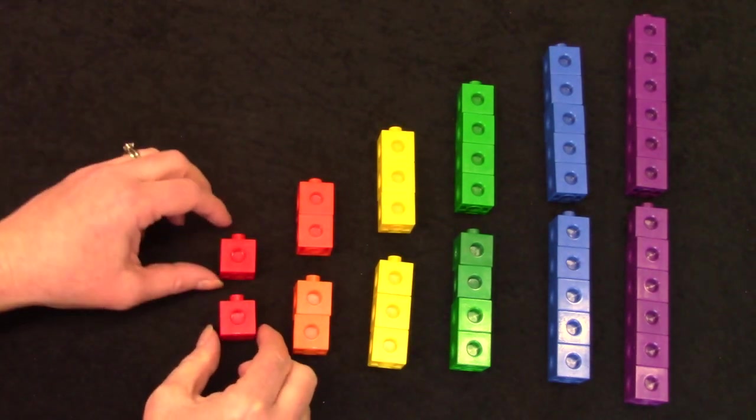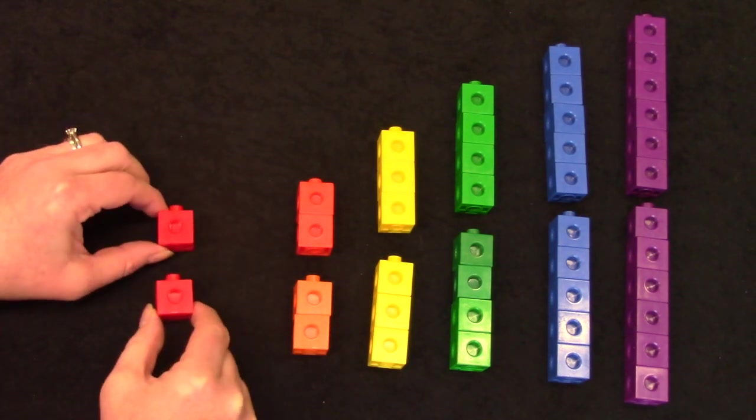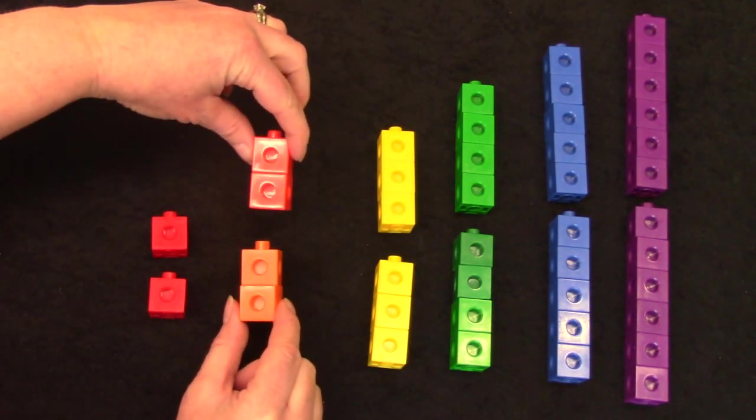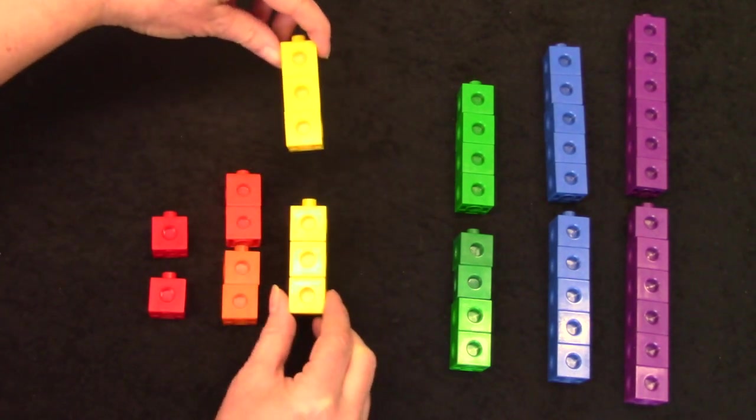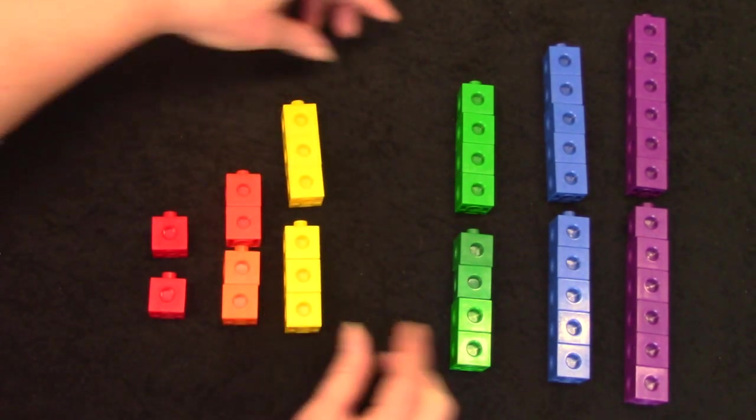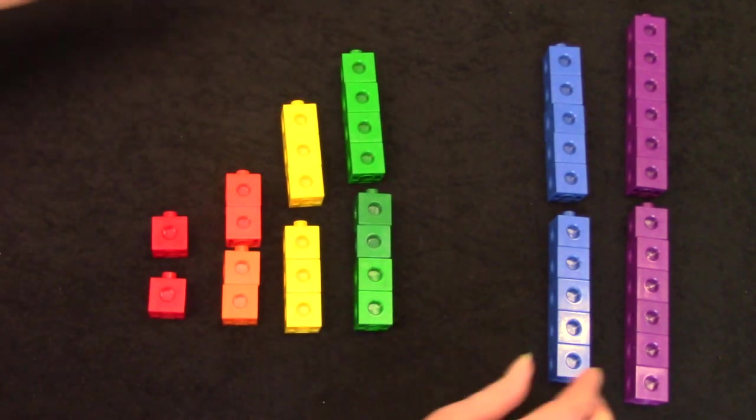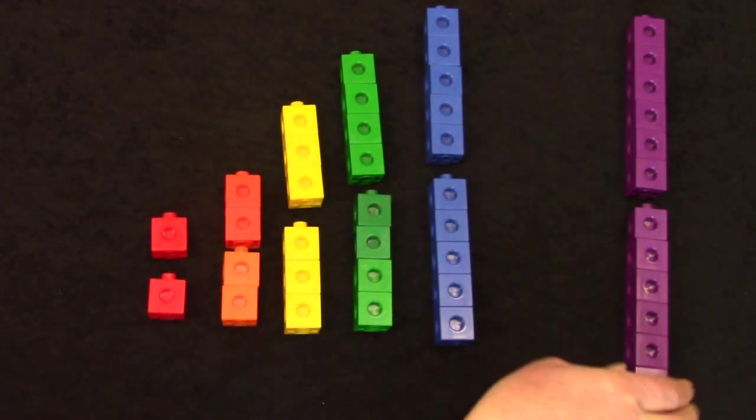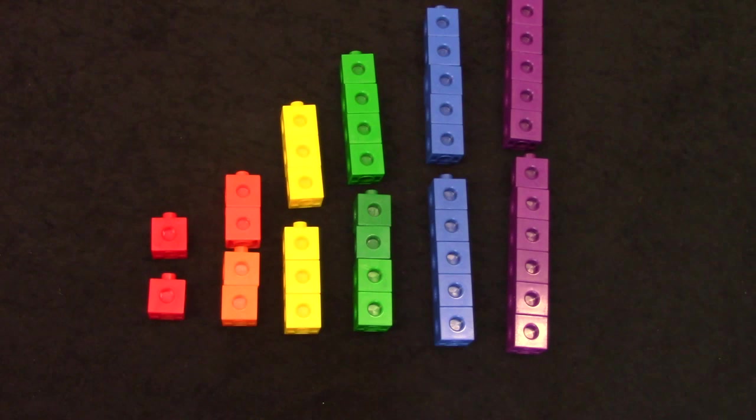Now you already know your doubles facts. If you add one plus one, what would be the answer? One plus one is two, and two plus two is four. Three plus three is six. Four plus four is eight. Five plus five is ten, and six plus six is twelve.